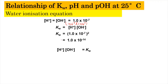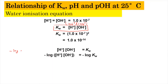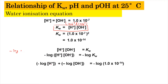Expanding that, we get Kw = 1.0 × 10⁻¹⁴. From this equation, we can apply a negative logarithm to both sides: −log([H⁺][OH⁻]) = −log(Kw). Expanding the logarithm gives −log[H⁺] + (−log[OH⁻]) = −log(Kw). Since −log[H⁺] = pH and −log[OH⁻] = pOH, substituting Kw = 1.0 × 10⁻¹⁴ into the calculator gives 14.